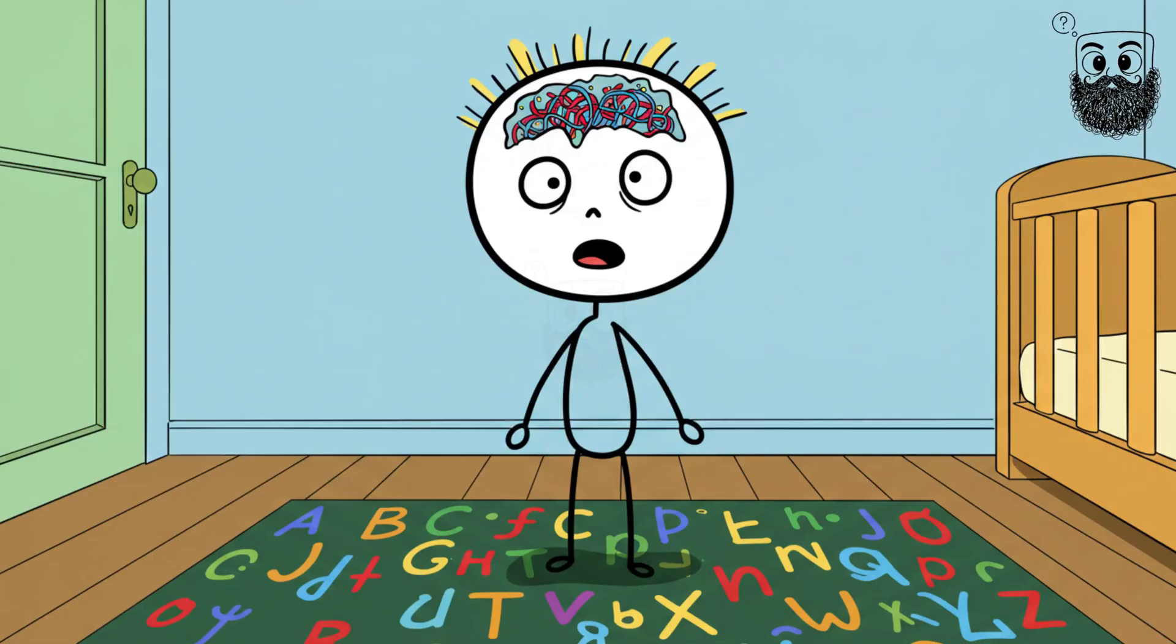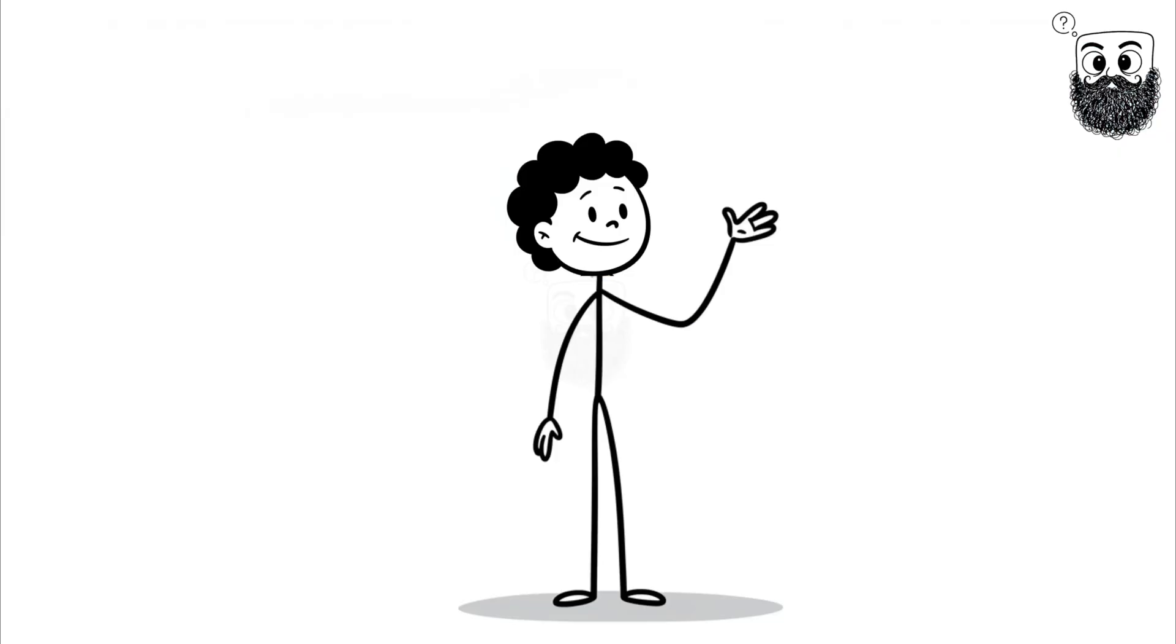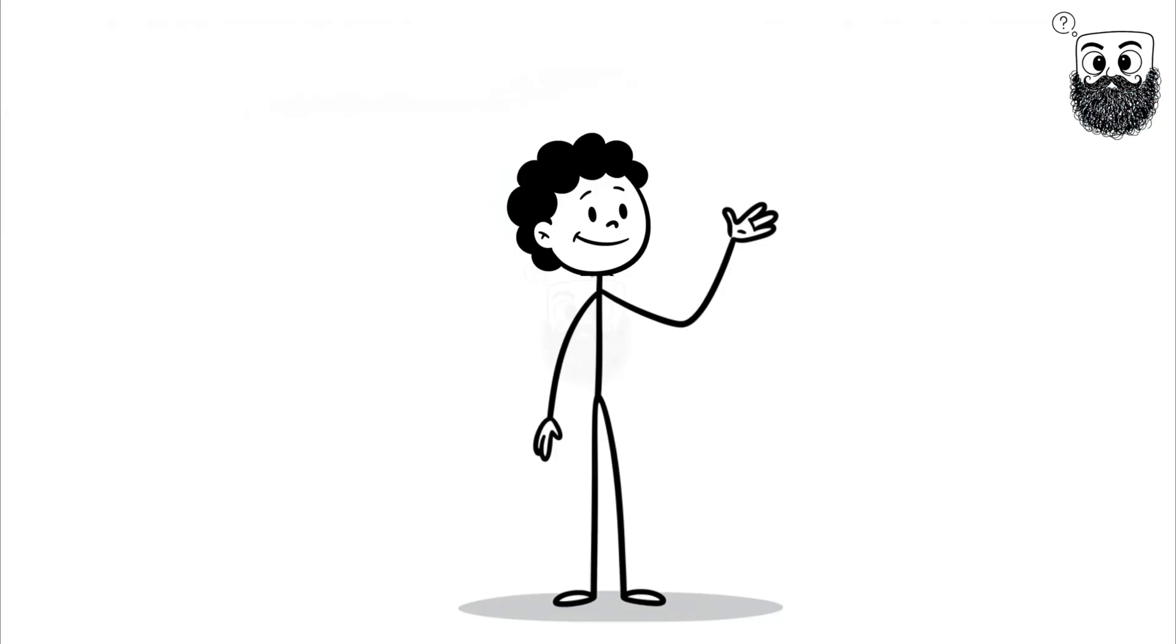It's like your brain's wiring got crossed during development. About 2-4% of people have this condition. These sensory crossovers aren't random. If the number 7 appears blue to someone with synesthesia, it will always be blue. Every single time.